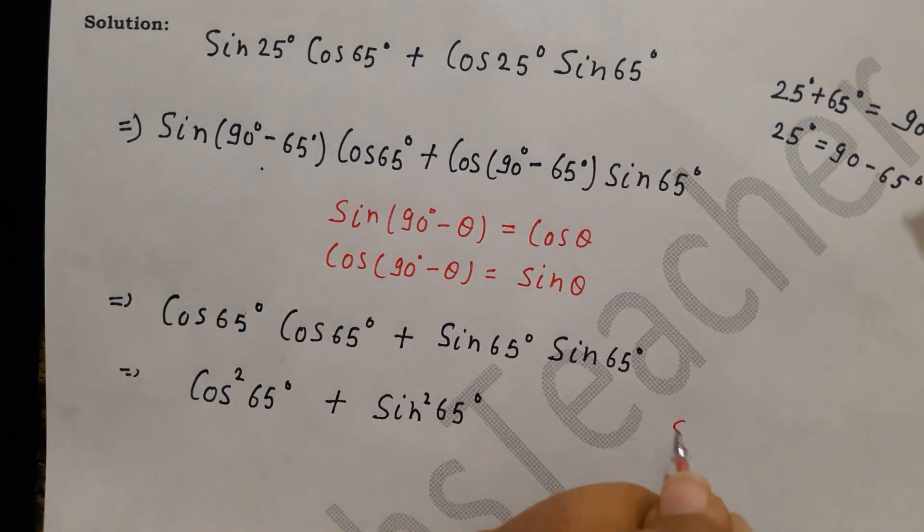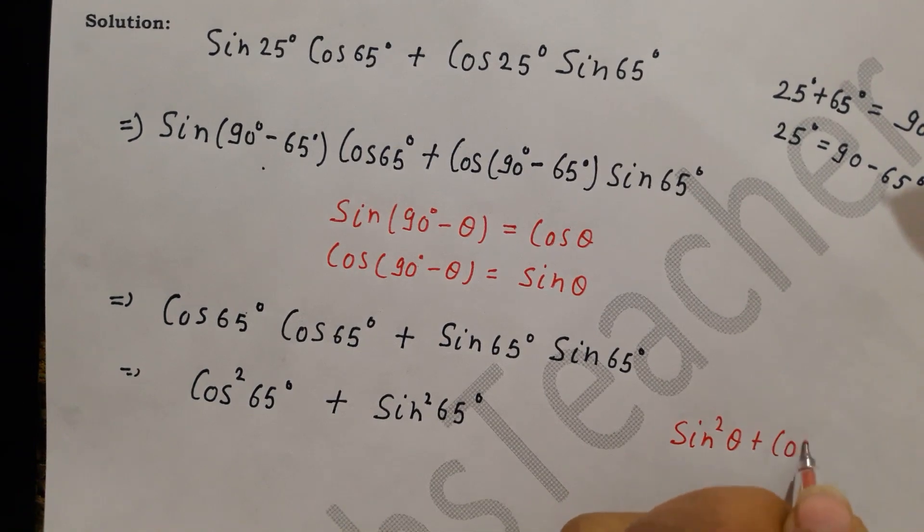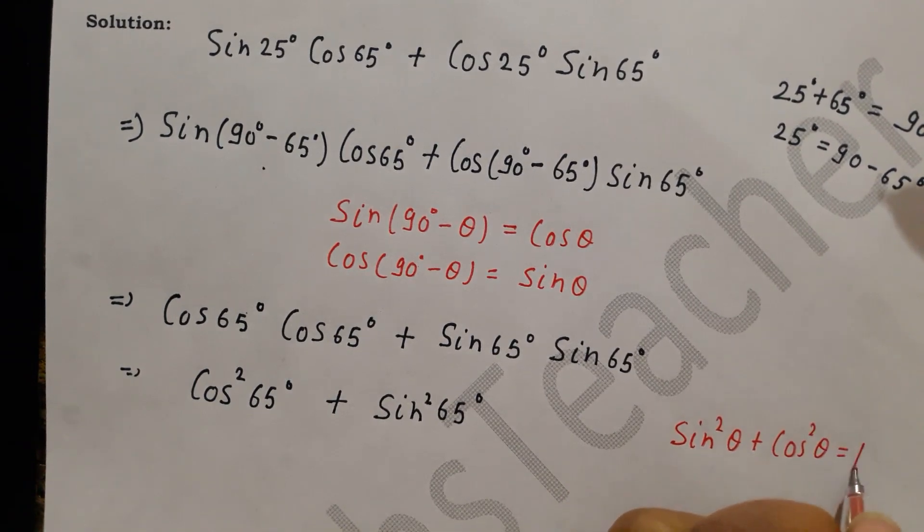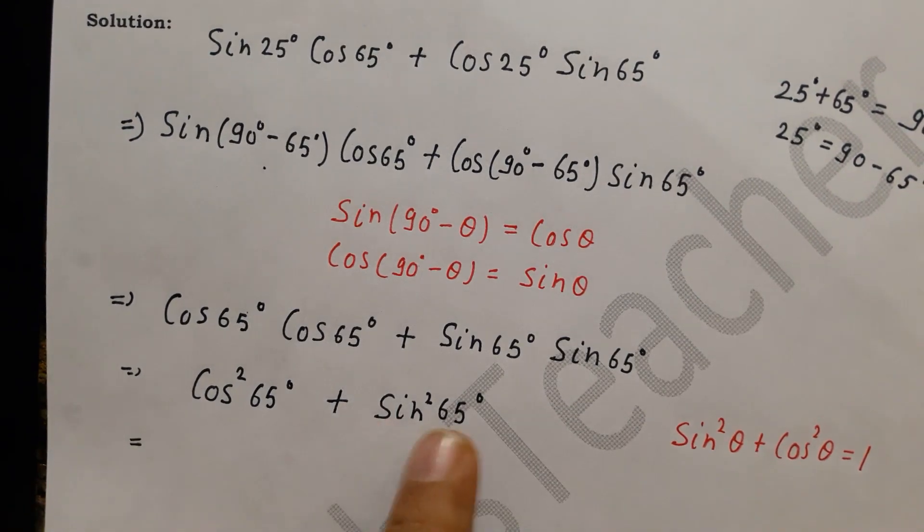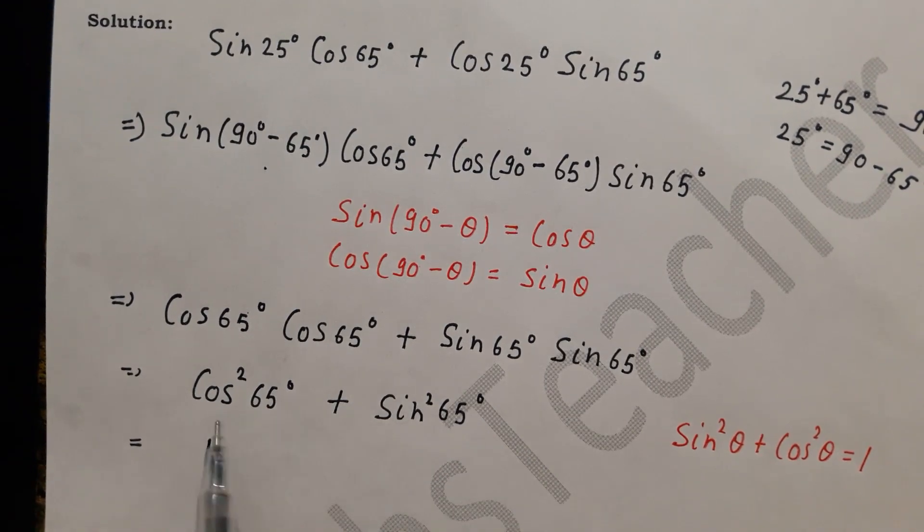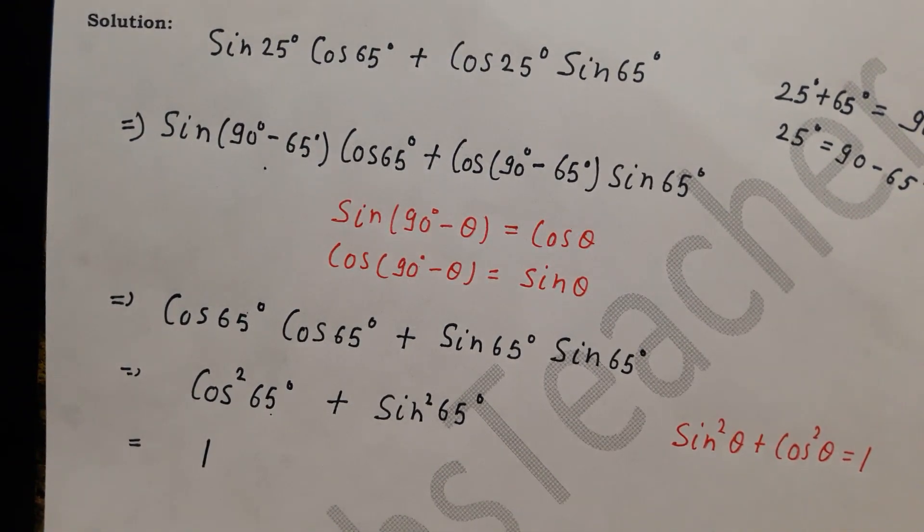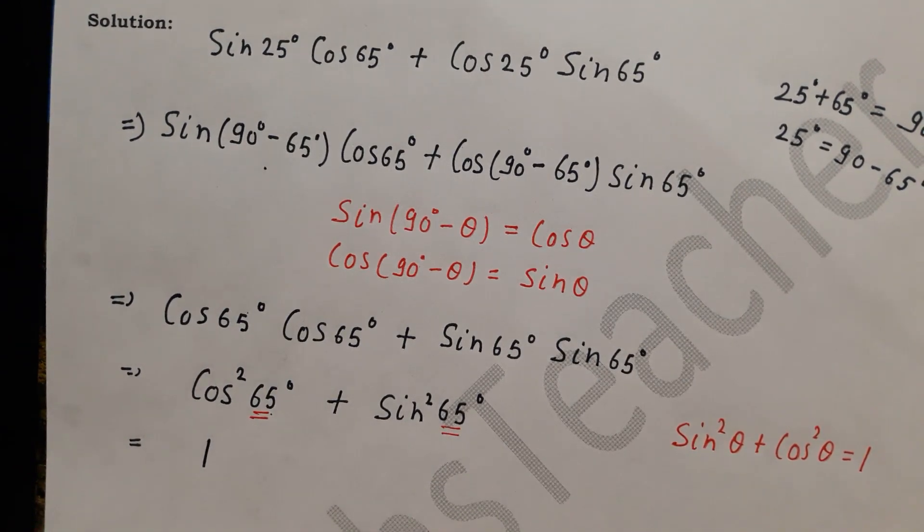Again, here is an identity: sin squared theta plus cos squared theta equals 1. So that's our value here. What will it be? Sin squared theta plus cos squared theta is 1. Both theta should be the same, angle should be the same. Here is 65 and how much is it? 65. So how much will it be? 1. So the answer is 1.